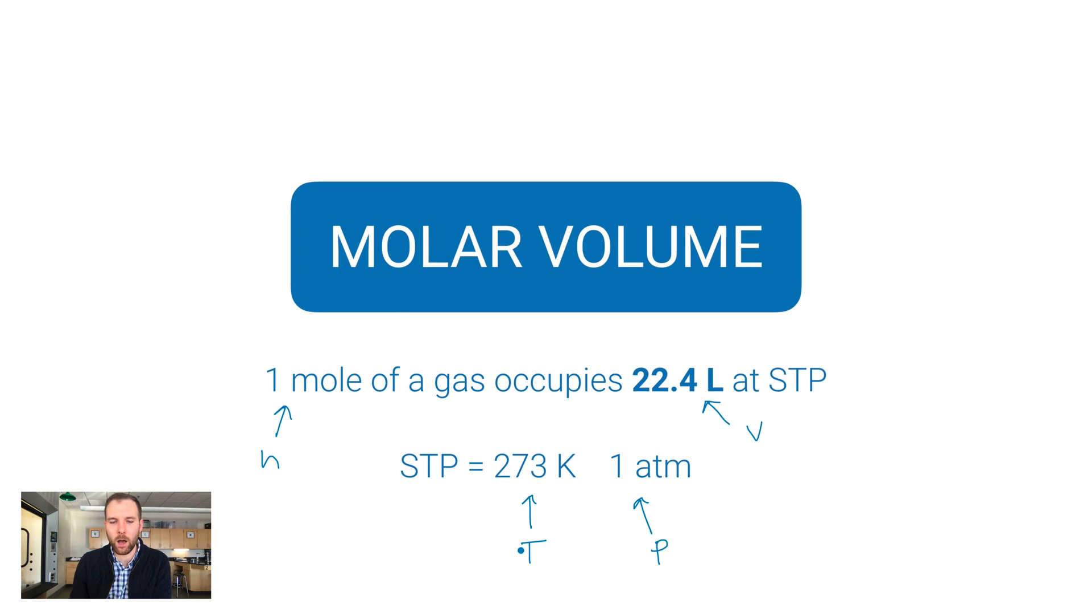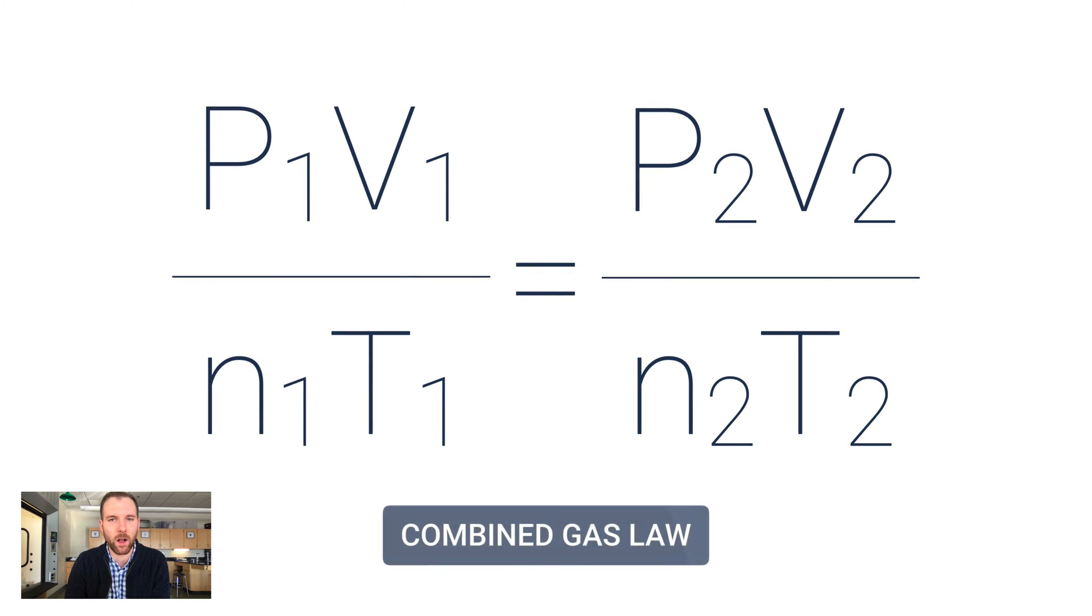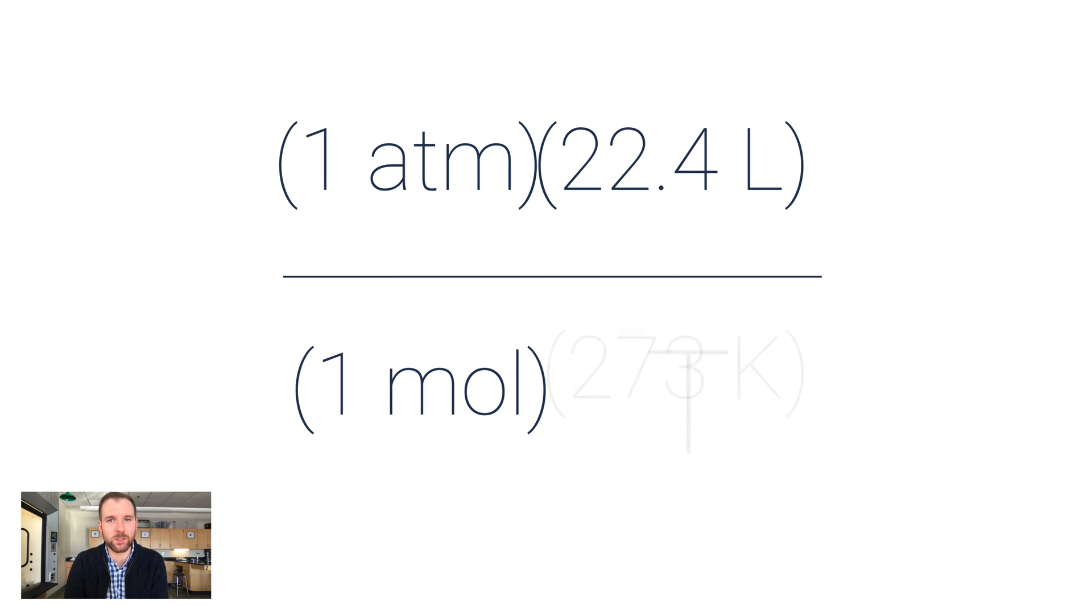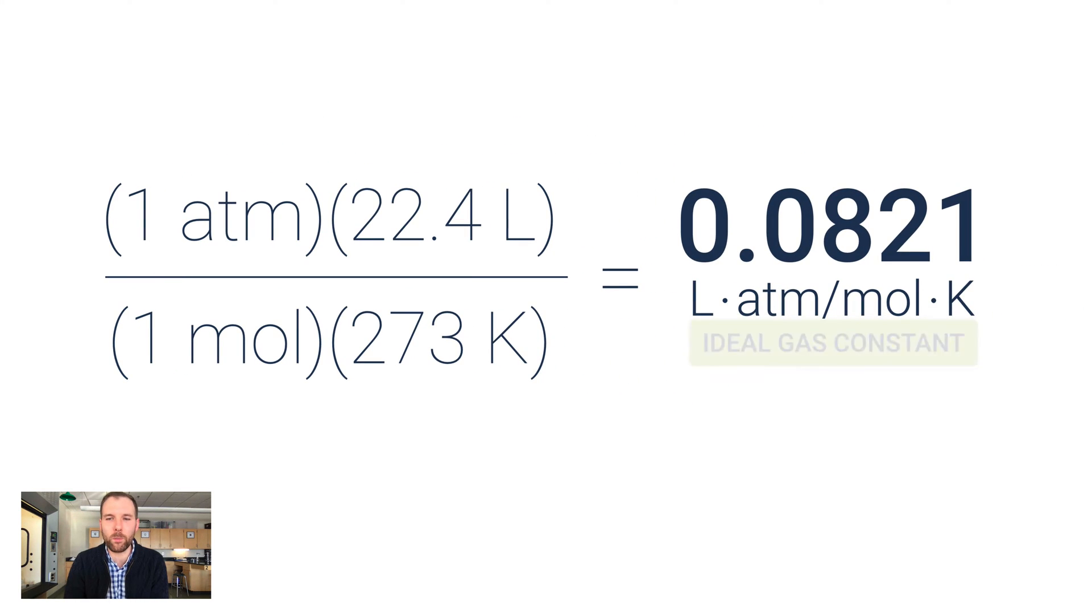So let's do that. Here's the combined gas law. Let's take just one side of this: P times V over n over T. Let's plug in values from that definition. The standard pressure was one atmosphere, volume, that molar volume, is 22.4 liters per one mole, and standard temperature is 273 kelvins. When I divide these values I get this number: 0.0821 liter atmospheres per mole Kelvin. This is specific to the pressure being in atmospheres, the volume being in liters, moles, and kelvins for temperature.